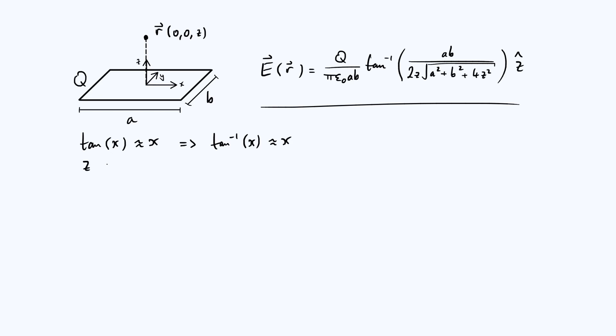The first limit I would like to consider is when z goes to infinity. So when z goes to infinity, the magnitude of the electric field goes to, you're still going to have your pre-factor of q over pi epsilon 0 ab, where a and b are the length and width of your rectangle. But as z gets very big, the denominator of the argument of the arctan function gets very large, and therefore the argument itself gets very small.